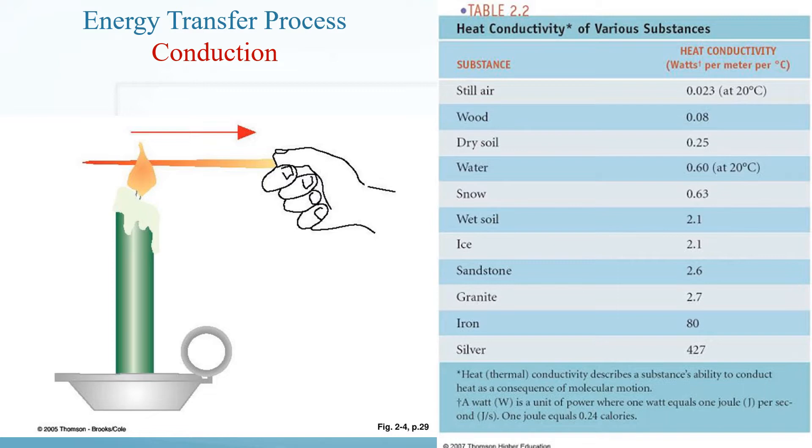Because of the energy they are absorbing from the flame, the molecules in the pin vibrate faster. The faster vibrating molecules cause adjoining molecules to vibrate faster. These in turn pass vibrational energy on to their neighboring molecules, and so on, gradually happening until the molecules at the finger end of the pin begin to vibrate rapidly.